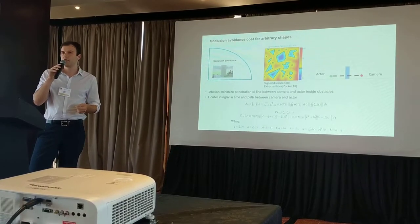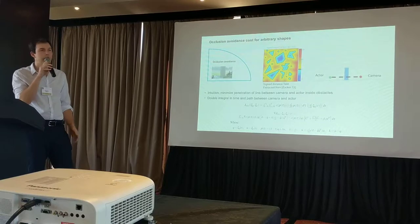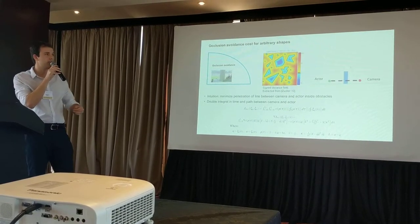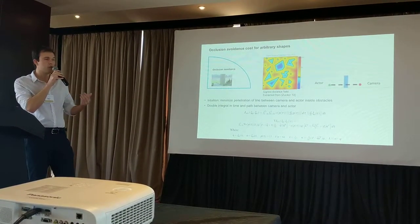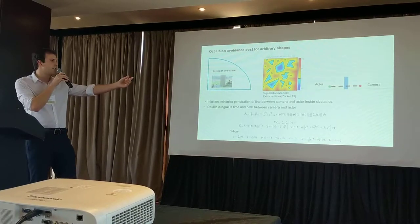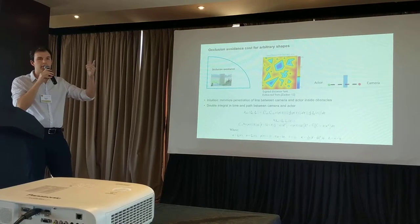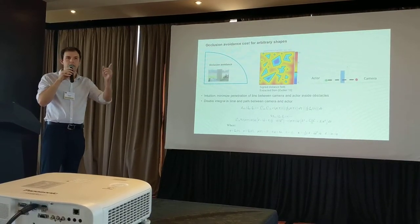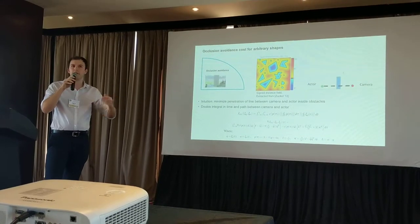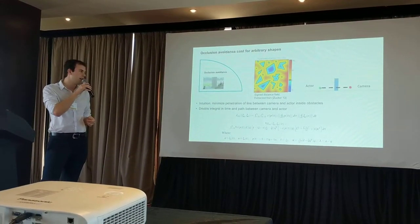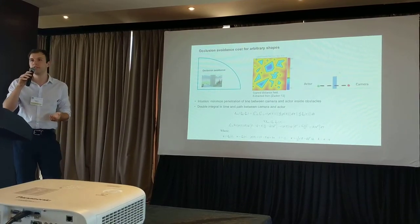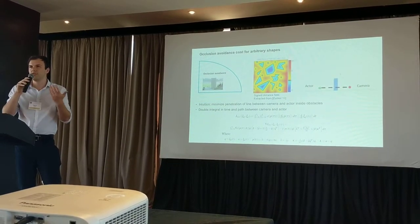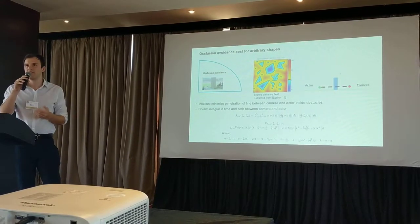Next, we have the occlusion cost function — something novel developed in this paper to work with arbitrary obstacle shapes. We also take advantage of the signed distance field. For each moment in time, we have a pair of actor and camera positions in space, and we minimize the penetration of the line connecting actor and camera into obstacles. We integrate this over the entire trajectory, yielding a differentiable cost function. This makes occlusion — usually a binary see/don't-see concept — something we can now actively avoid.